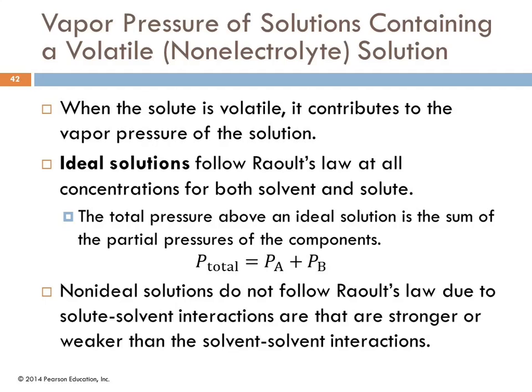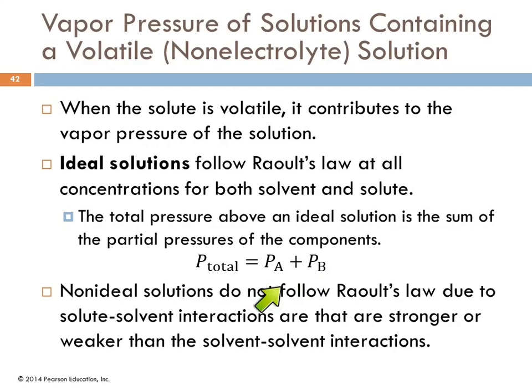What we've been discussing assumes the solute is non-volatile—meaning it doesn't vaporize easily. If you have a volatile non-electrolyte solute, things get more complicated because the solute also vaporizes and contributes to the vapor pressure. Ideal solutions follow Raoult's Law at all concentrations for both solvent and solute; the total pressure above such a solution is the sum of the partial pressures of each component.